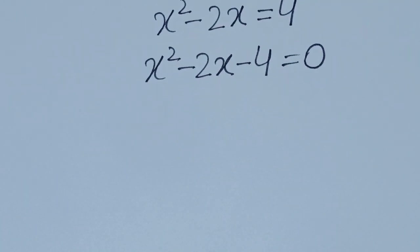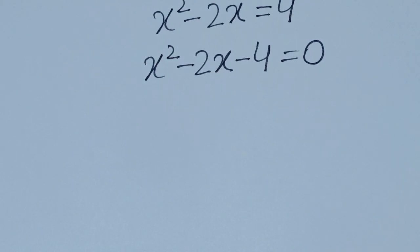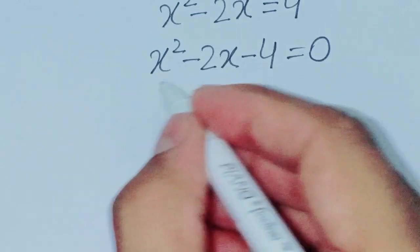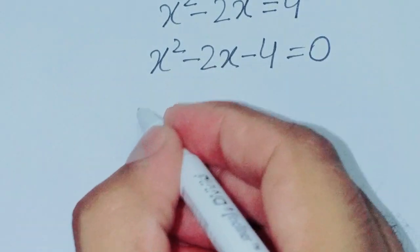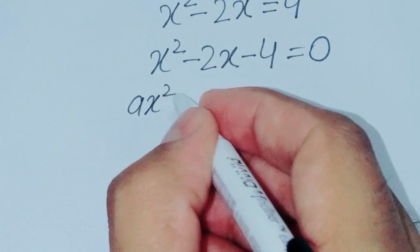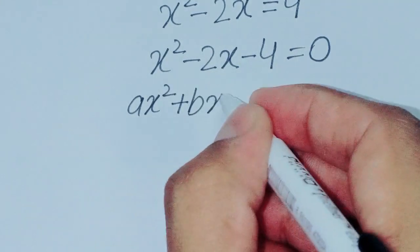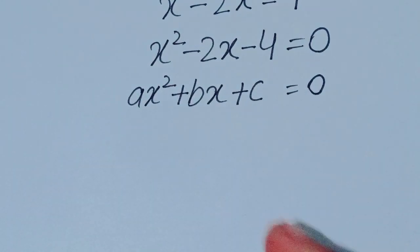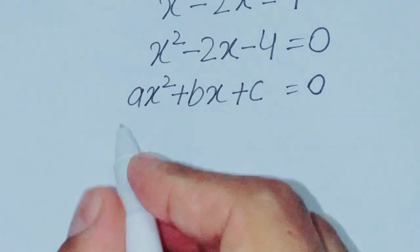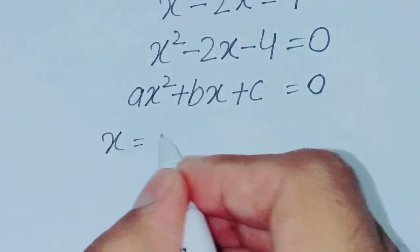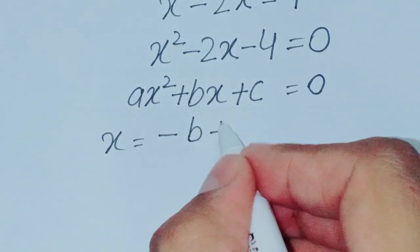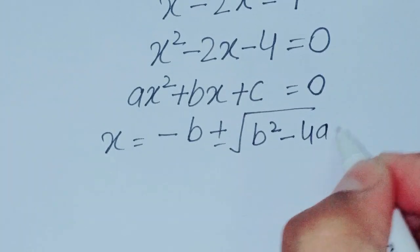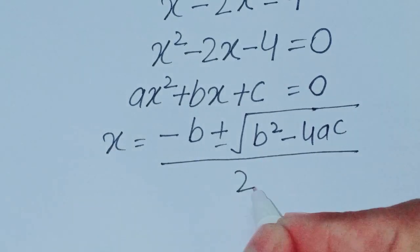This is a quadratic equation, so we can apply the quadratic formula. We compare with the general form ax squared plus bx plus c equals 0. The quadratic formula is x equals minus b plus or minus the square root of b squared minus 4ac, all over 2a.